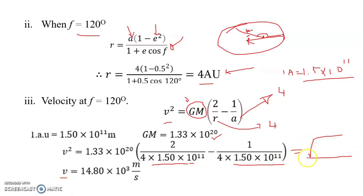After substituting, you get a result in v². To obtain v, take the square root of that value. That is all for this problem. Thank you.